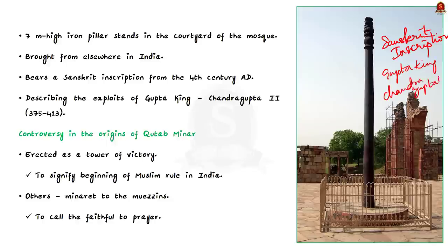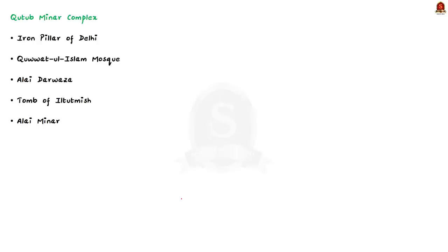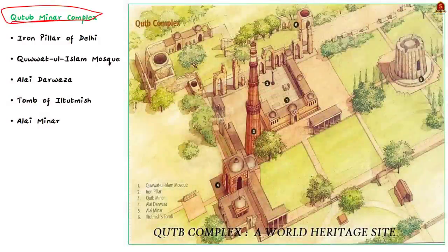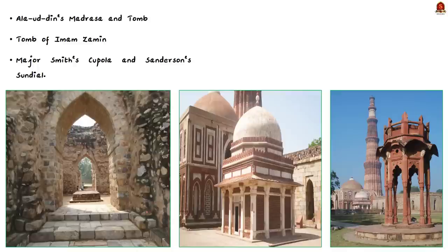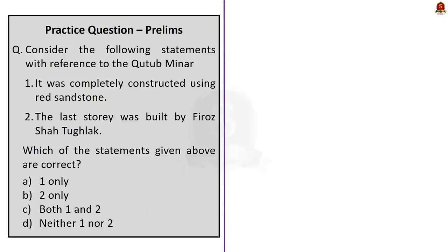The origin of Qutb Minar is shrouded in controversy. Some believe it was erected as a tower of victory to signify the beginning of Muslim rule in India, while others say it served as a minaret to call the faithful to prayer. The Qutb Minar is surrounded by seven great historical monuments and all together they are referred to as the Qutb Minar complex. The complex includes: the Iron Pillar of Delhi, Quwwat-ul-Islam Mosque, Alai Darwaza, the Tomb of Iltutmish, Alai Minar, Alauddin's Madrasa and Tomb of Imam Zamin, Major Smith's Cupola, and Sanderson's Sundial. Each and every point in this discussion is very important and relevant to the preliminary examination.